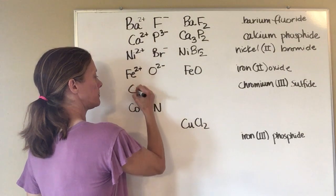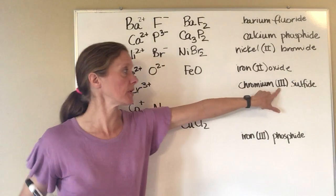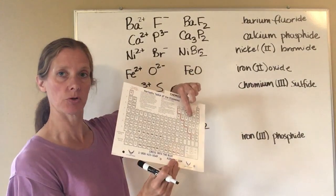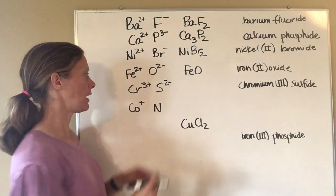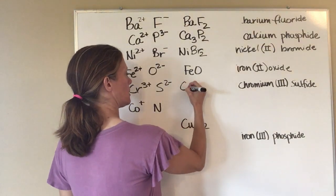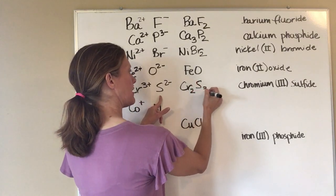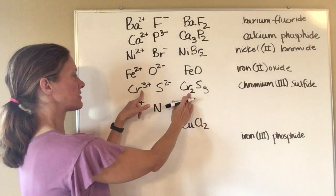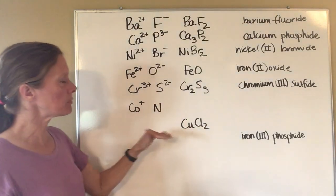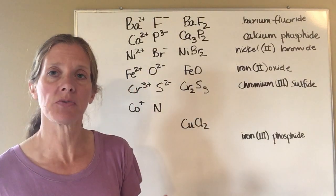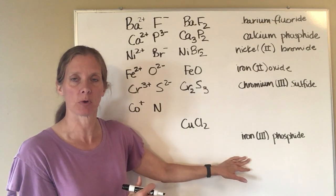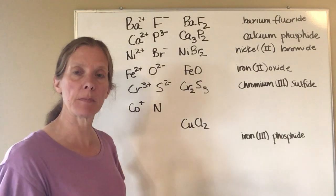Here I've given you the name: chromium(III) sulfide. Chromium has a positive three charge as indicated by the Roman numeral. Sulfide is right under oxygen on the periodic table, so sulfur has a negative two charge. To balance: two chromiums at positive three gives positive six, and three sulfides at negative two gives negative six — they add up to zero, giving Cr₂S₃. Now pause the video and try the last three rows by yourself, then come back and hit play.